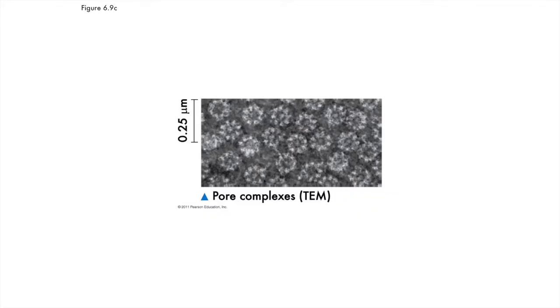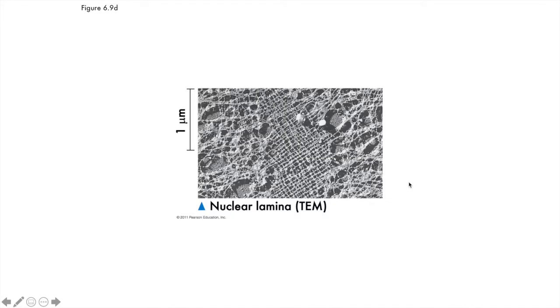In this TEM image, you can see the pores at greater magnification, and see that there are several protein complexes that make up each pore complex. One more feature of the nuclear envelope to tell you about is the nuclear lamina. This TEM image looks like something woven, and that woven stuff is protein which makes up the nuclear lamina. This structure reinforces the envelope and keeps it from collapsing in on the DNA, kind of like tent poles.